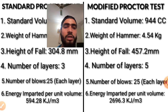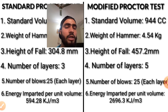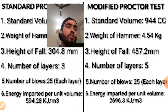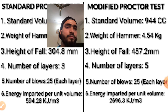The next point of difference is the energy imparted. The energy imparted in standard proctor test is 594.28 kJ/m³, and in modified proctor test it is approximately 4.5 times that — it is 2696.3 kJ/m³, generally considered as 2700 kJ/m³. This is a common exam question: how much energy is imparted in modified proctor test with respect to standard proctor test? The answer is 4.5 times.